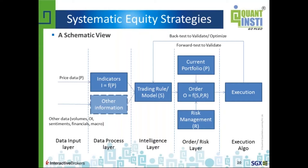The inputs to this model are your indicators, which can be raw input data or functions applied to that data. The output feeds into your order management module, which takes the input signal, your current portfolio positions, and your risk management rules, and creates an order. That order goes to your execution module, which decides how best to execute a given chunk of orders — which exchanges to route to, or how to slice and place orders in the case of very large orders. Overall, the two most important elements of this entire pipeline are gathering proper data and validating your trading rules.